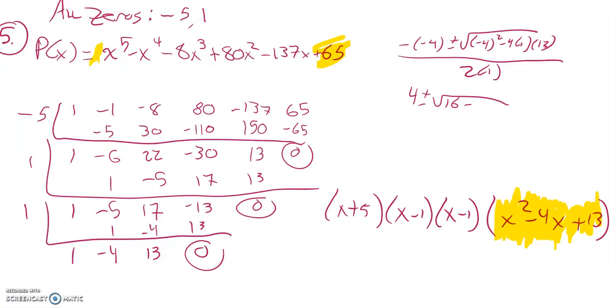16 minus 52 is -36. So this would be 4 ± 6i over 2, and now these are both being divided by that 2, so my answer is 2 ± 3i.